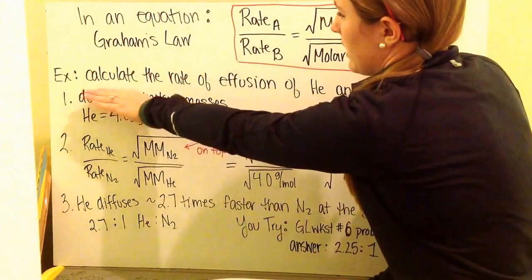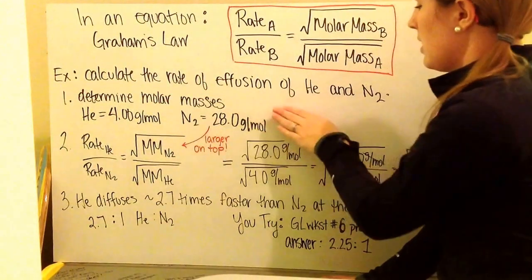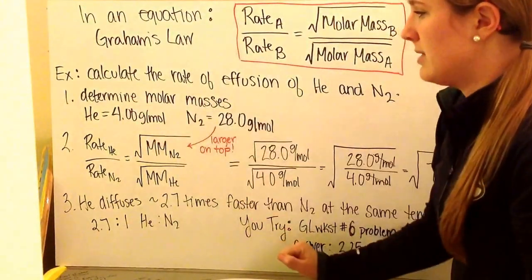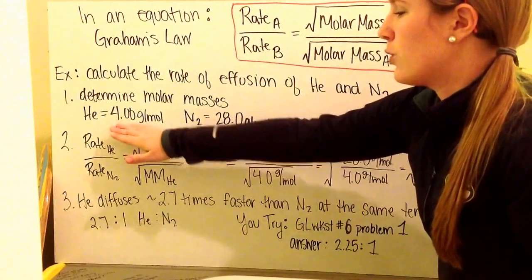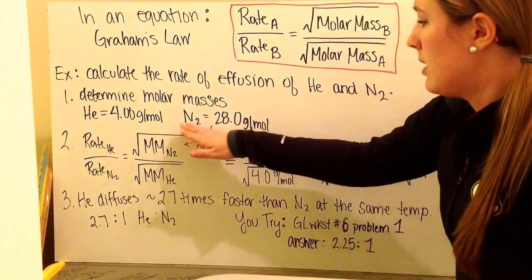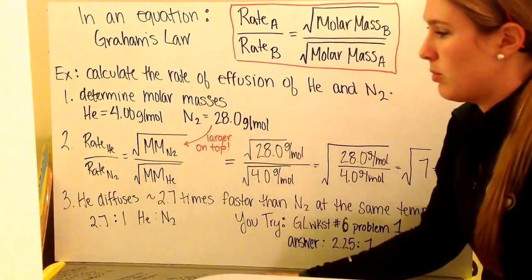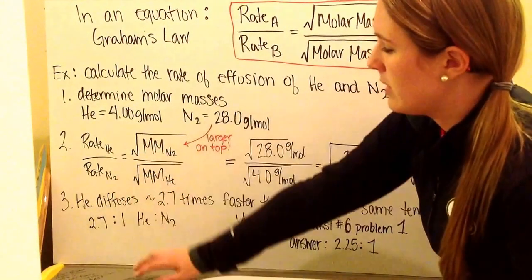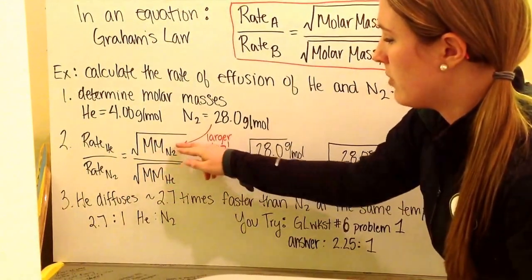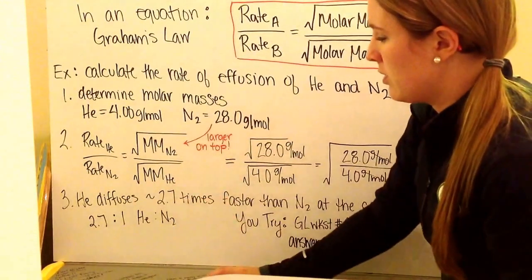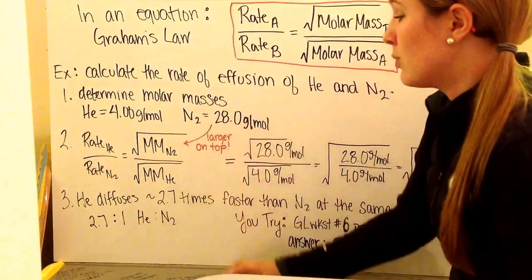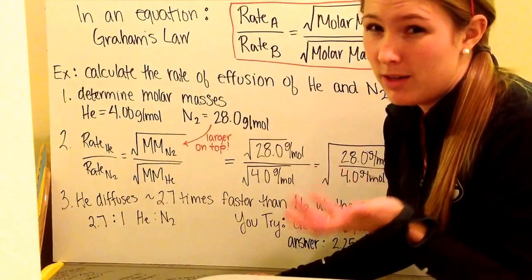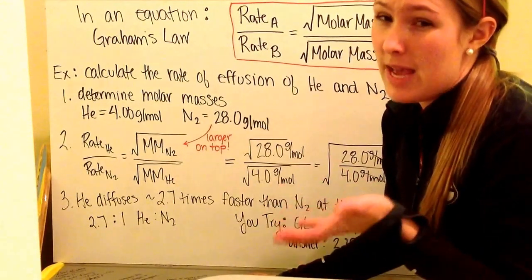So let's go ahead and do an example. We're going to calculate the rate of effusion of helium and nitrogen. The first thing we want to do is determine the molar masses. Our helium's molar mass is 4.0 grams per mole. Nitrogen is 28.0 grams per mole. Next we're going to use our equation for Graham's law. Our rate of helium divided by the rate of nitrogen is equal to the square root of the molar mass of nitrogen divided by the square root of the molar mass of helium. I like to put the larger one on top. That's going to give me a number greater than 1. That's something that I can comprehend better than a number less than 1.